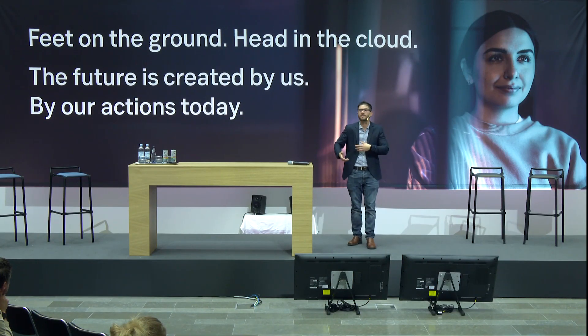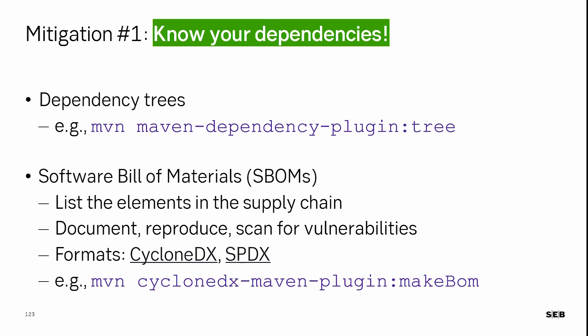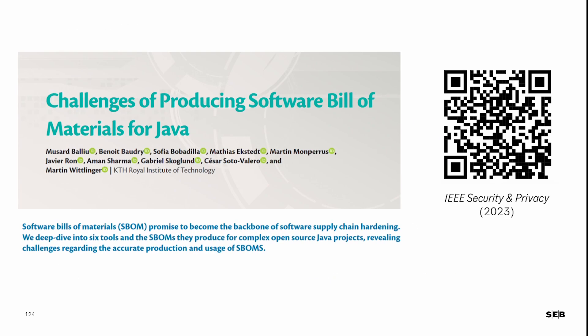An SBOM — Software Bill of Materials — is a way to list all artifacts and software needed to deploy your application. It works by hashing all packages so every package has a unique hash, ensuring you are delivering to customers exactly the software you think you are — not a compromised version. I recommend CycloneDX, a very popular project that supports Maven and Java. I also published a paper titled 'Challenges of Producing Software Bill of Materials for Java' in IEEE Security and Privacy — the QR code is available if you're interested.